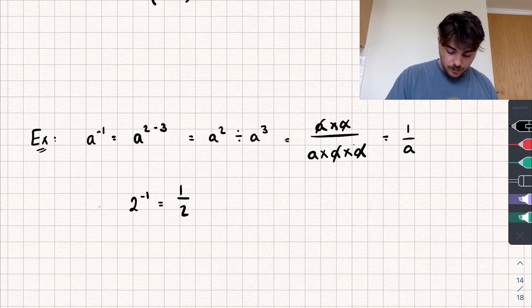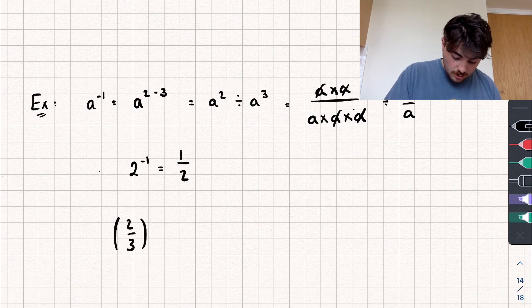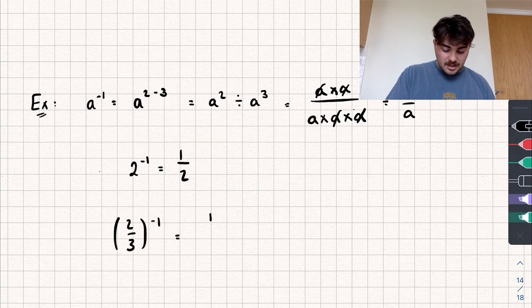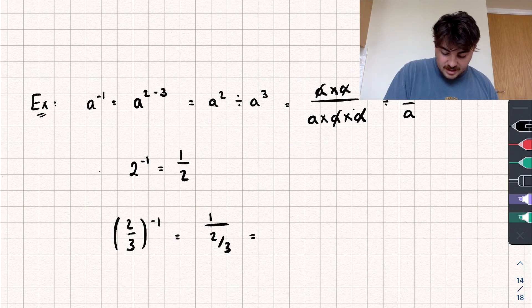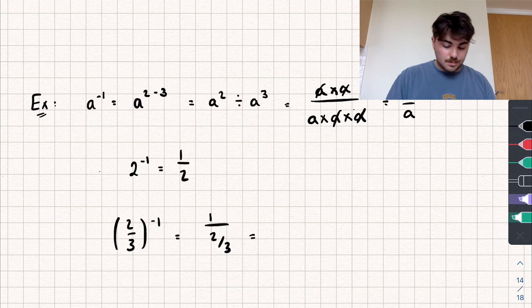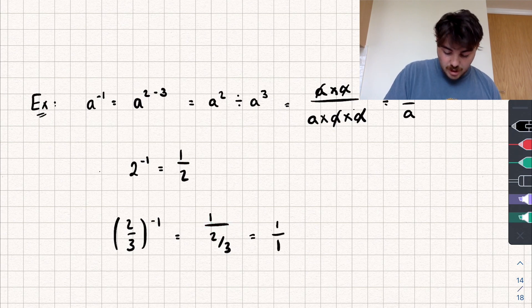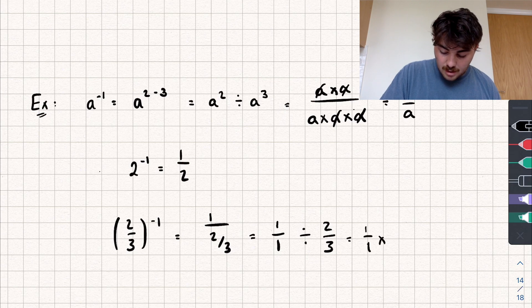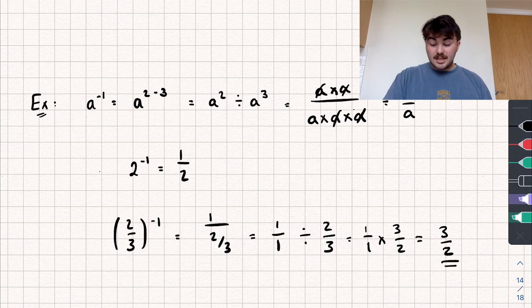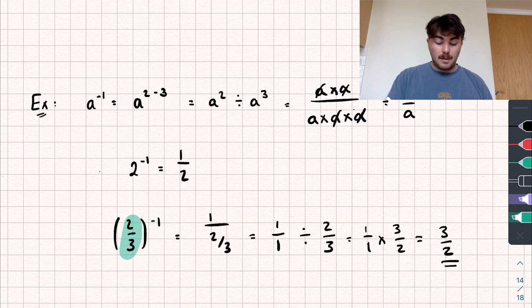If we have a fraction to the power of negative one, say two-thirds to the power of negative one, we take the reciprocal: one divided by two-thirds. Dividing by a fraction means we flip and multiply: one over one multiplied by three over two, giving three over two. So raising a fraction to the power of negative one simply flips the numerator and denominator.